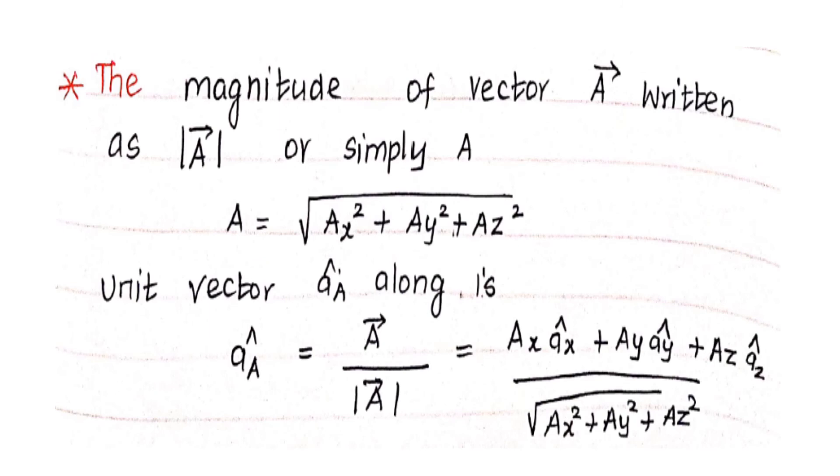Next, we are going to see how to find out the magnitude of vector A. The magnitude of vector A is written as A vector, then one modulus. This is known as magnitude of vector A. Or simply, we can write A only. A is equal to square root of A_x square plus A_y square plus A_z square. What is a_A? That is A vector divided by magnitude of A. A vector for the Cartesian system is known. And A magnitude also known. Now, divide both, we get the unit vector a_A.